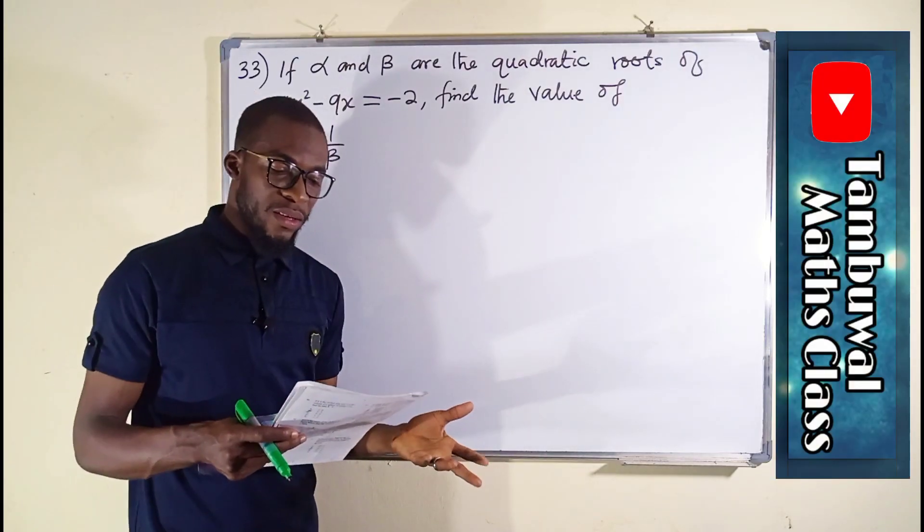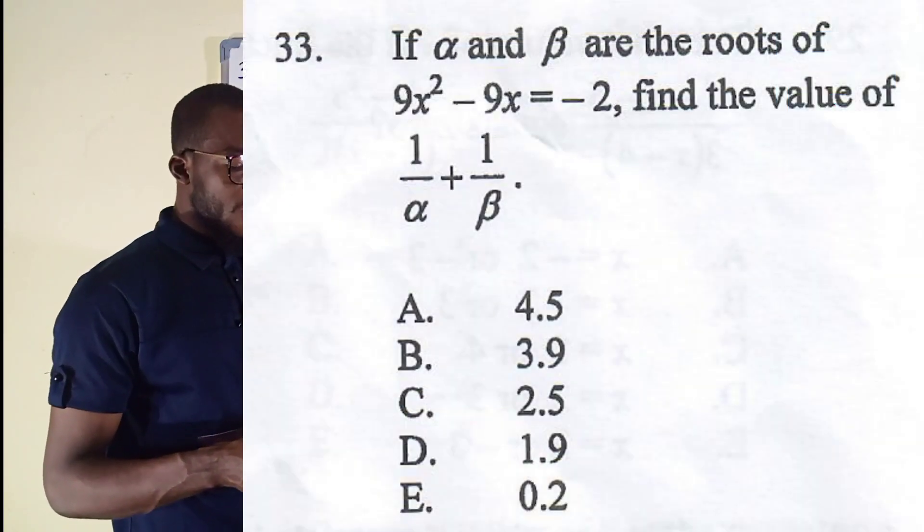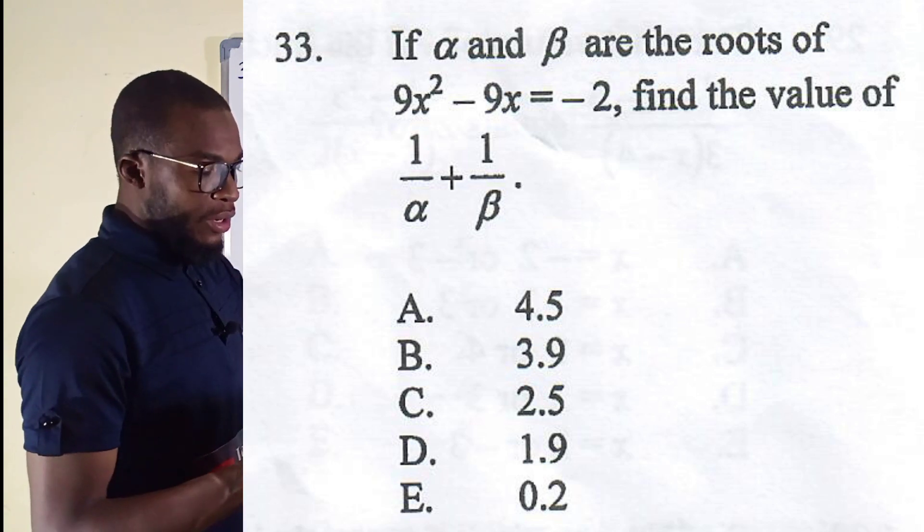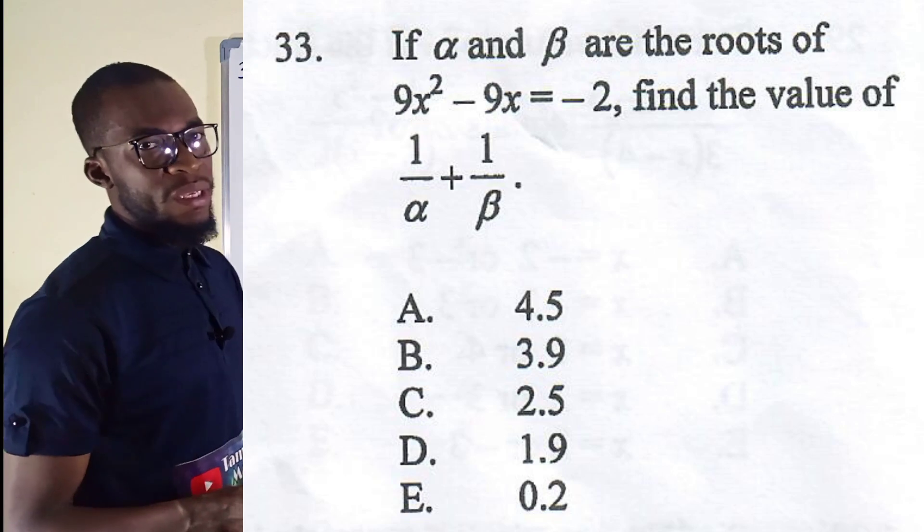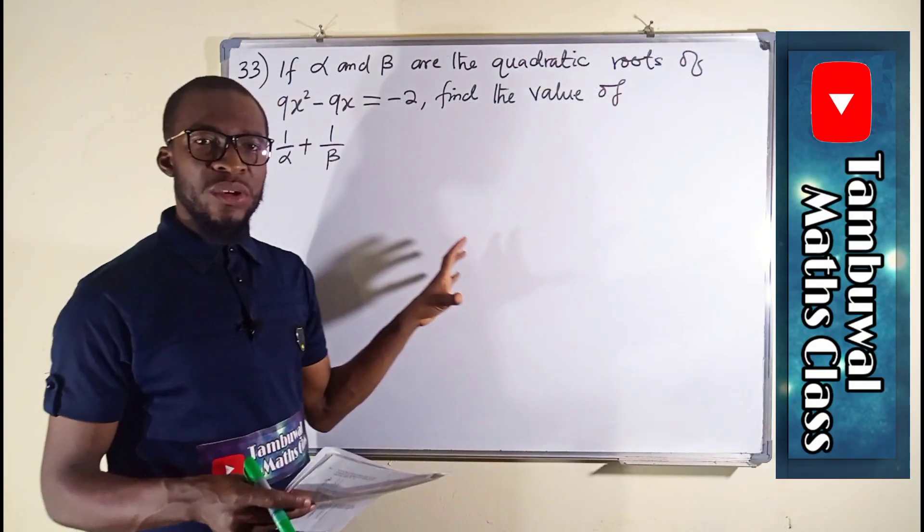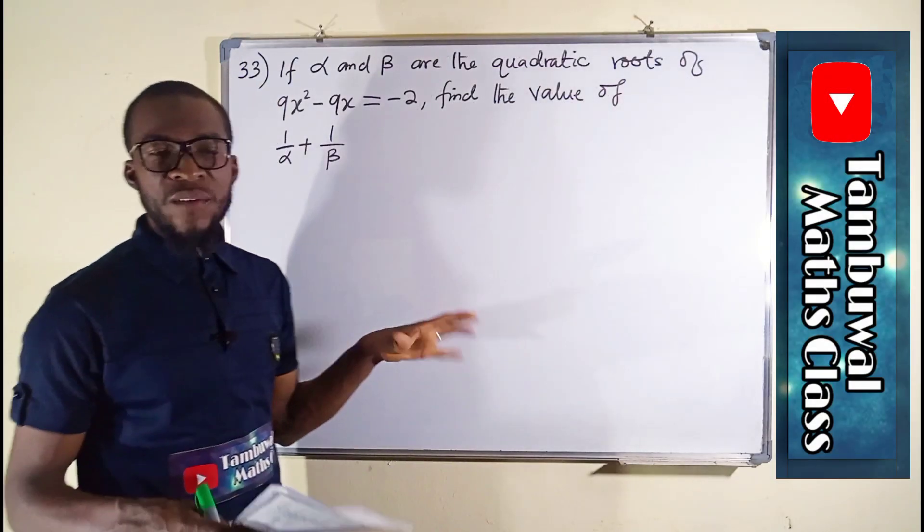Question number 33 says if alpha and beta are the roots of this quadratic equation, find the value of 1 over alpha plus 1 over beta. What this question is trying to say is whenever you solve a quadratic equation, you normally obtain two solutions.